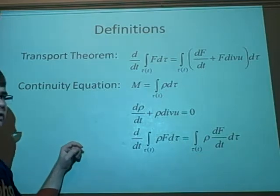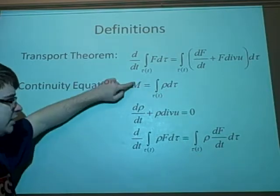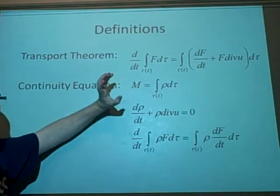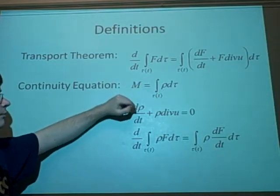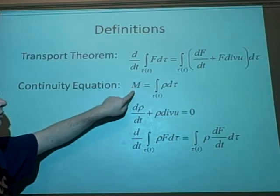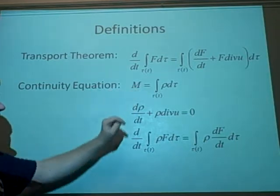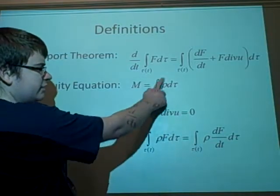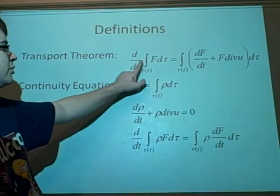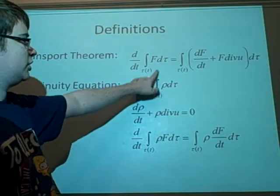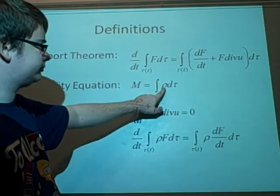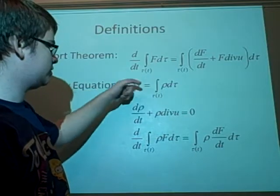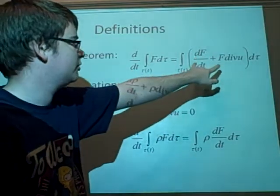And we should note that if we were to differentiate the mass, then that would equal zero because the mass is just going to be a value. So dm over dt would be zero. But then if we differentiate this part, we can use the transport theorem here, so with rho in place of f.